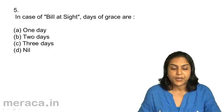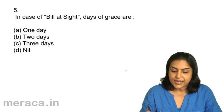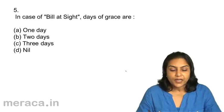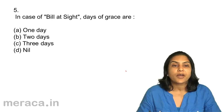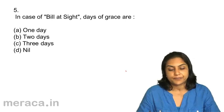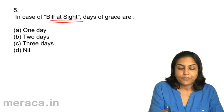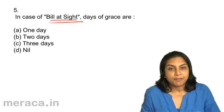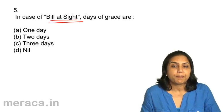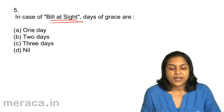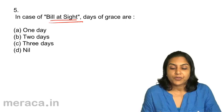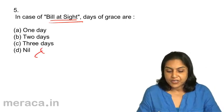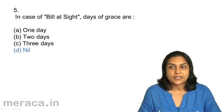Question 5. In case of a bill at sight, days of grace are: a. 1 day, b. 2 days, c. 3 days, or d. nil. A bill at sight is a demand bill — it has to be paid immediately, and therefore the days of grace are 0. Answer 5d is correct.